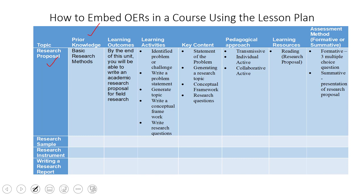For example, you are dealing with research proposal — that is our topic. We are saying the student should have acquired knowledge in basic research methods before this. Which means without the knowledge in basic research methods, the student won't be able to work on a research proposal.